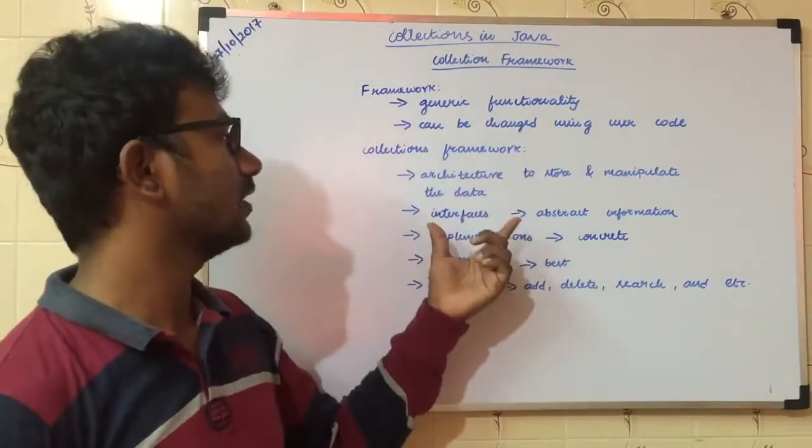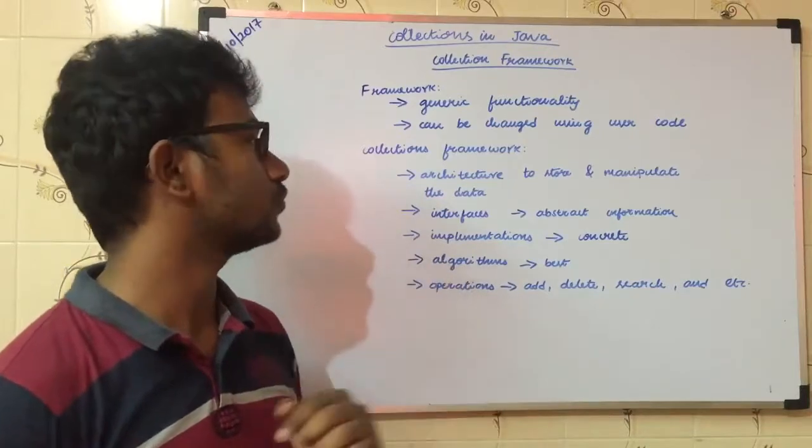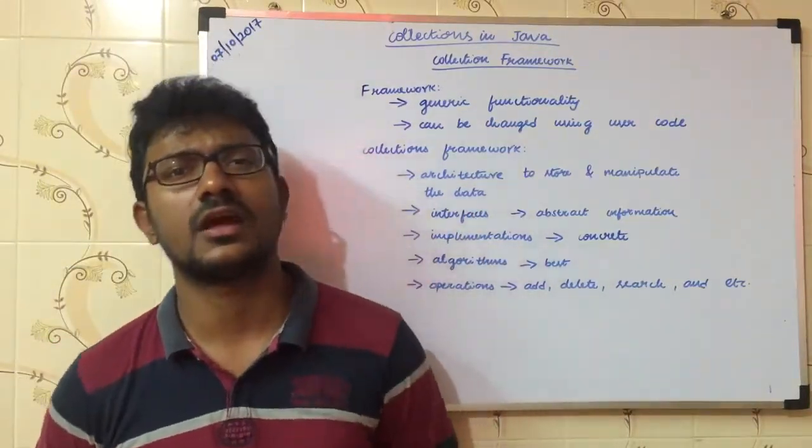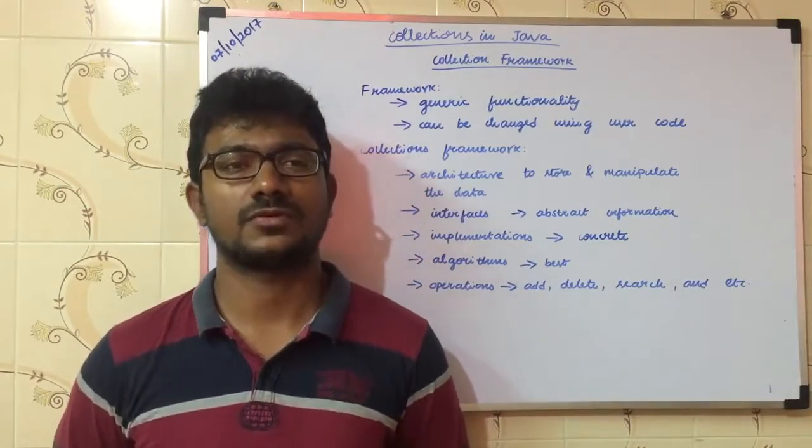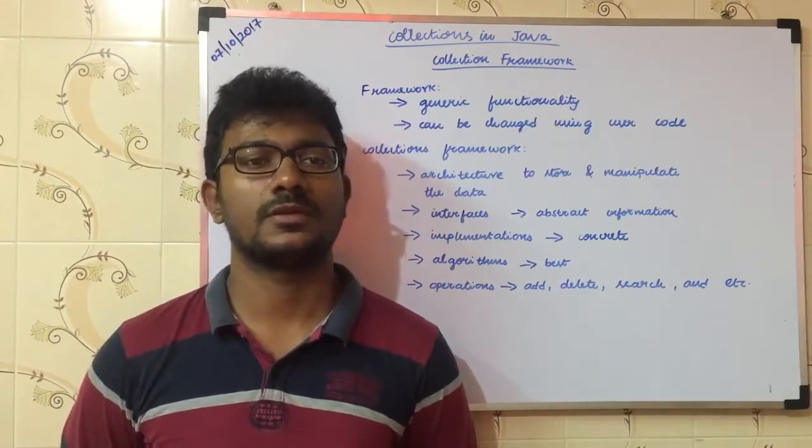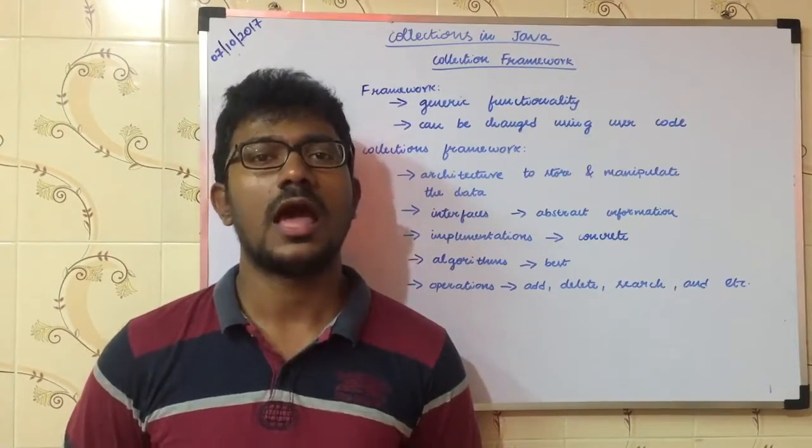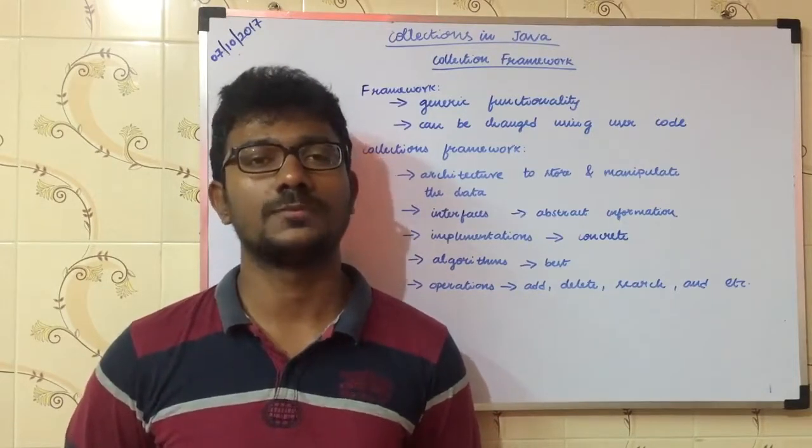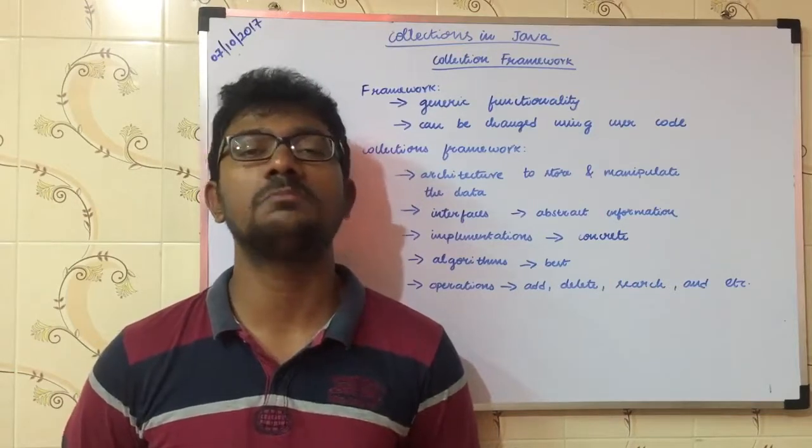Collection framework includes interface, implementation, algorithms, and operations. Interfaces are abstract information. Abstract information means like a USB interface. USB interface is 16-pin or 18-pin support. USB 5-volt output input is defined. It can be implemented.